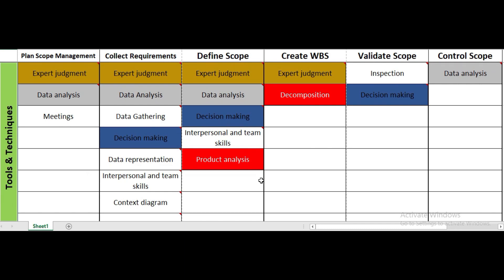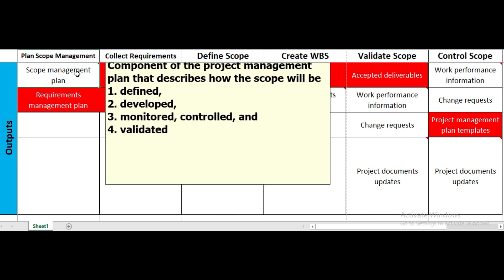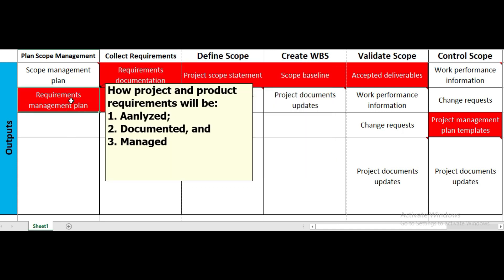Now let's look at outputs. The output of plan scope management is the scope management plan, a component of the project management plan that describes how scope will be defined, developed, monitored, controlled, and validated. The requirements management plan — shown in red as a frequently tested item — defines how project and product requirements will be analyzed, documented, and managed.